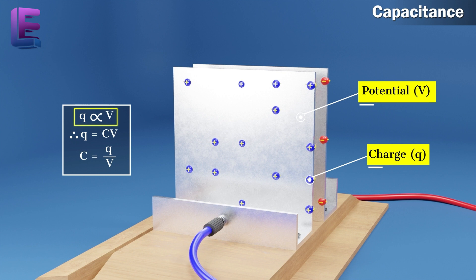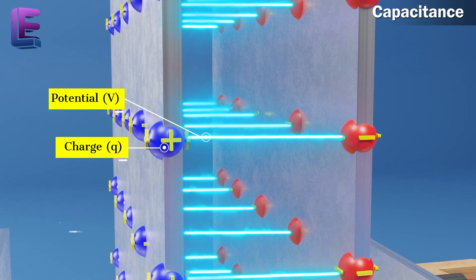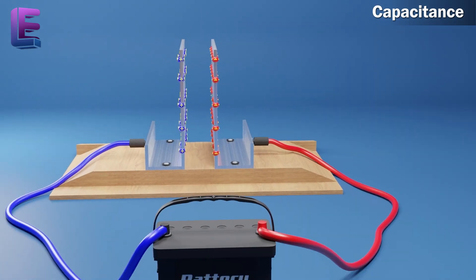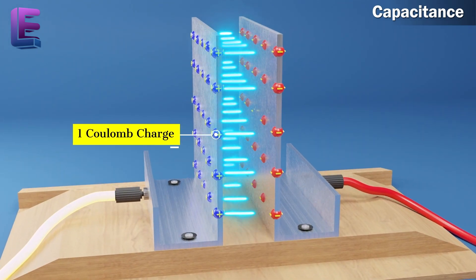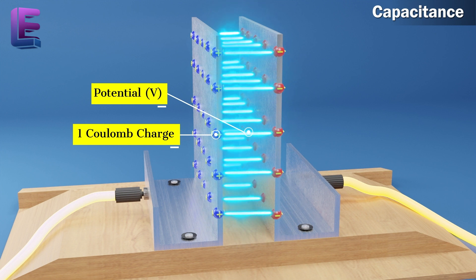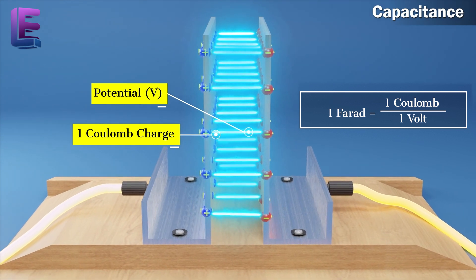Q is proportional to V. Therefore, Q is equal to CV, where C is the proportionality constant. This is the capacitance of the conductor. Capacitance of a conductor is the ratio of its charge and potential. Its unit is farad. The capacitance of a capacitor is 1 farad when 1 coulomb of electricity changes the potential between the plates by 1 volt. 1 farad is equal to 1 coulomb divided by 1 volt.